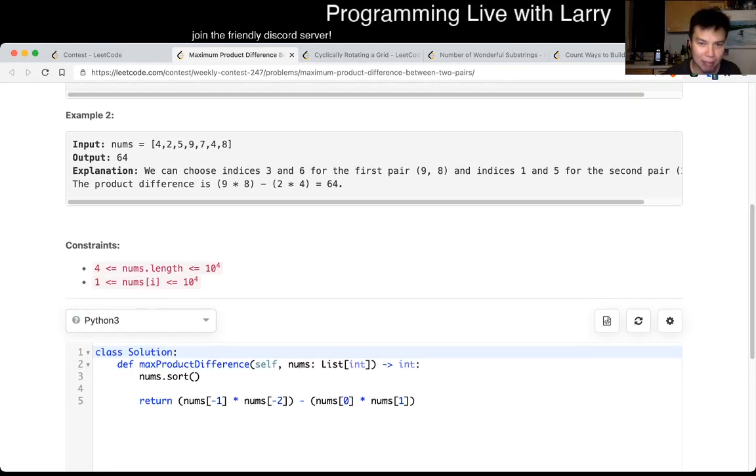Also keeping in mind that there are at least four elements, you sort, take the biggest two elements, and in Python, this is the notation for the last element and second to last element, minus the product of the first two elements. That's pretty much it.